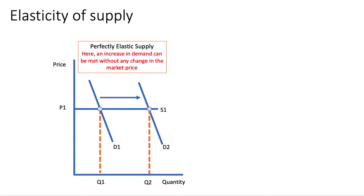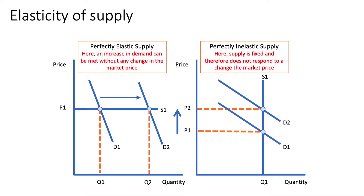Take a look at a couple of technical diagrams first so you're familiar with the material. This is a perfectly elastic supply curve — in this situation, any change in demand can be met without any change in price. The polar opposite is a fixed supply, where suppliers are invariant to demand, so supply does not respond at all to a change in the market price.